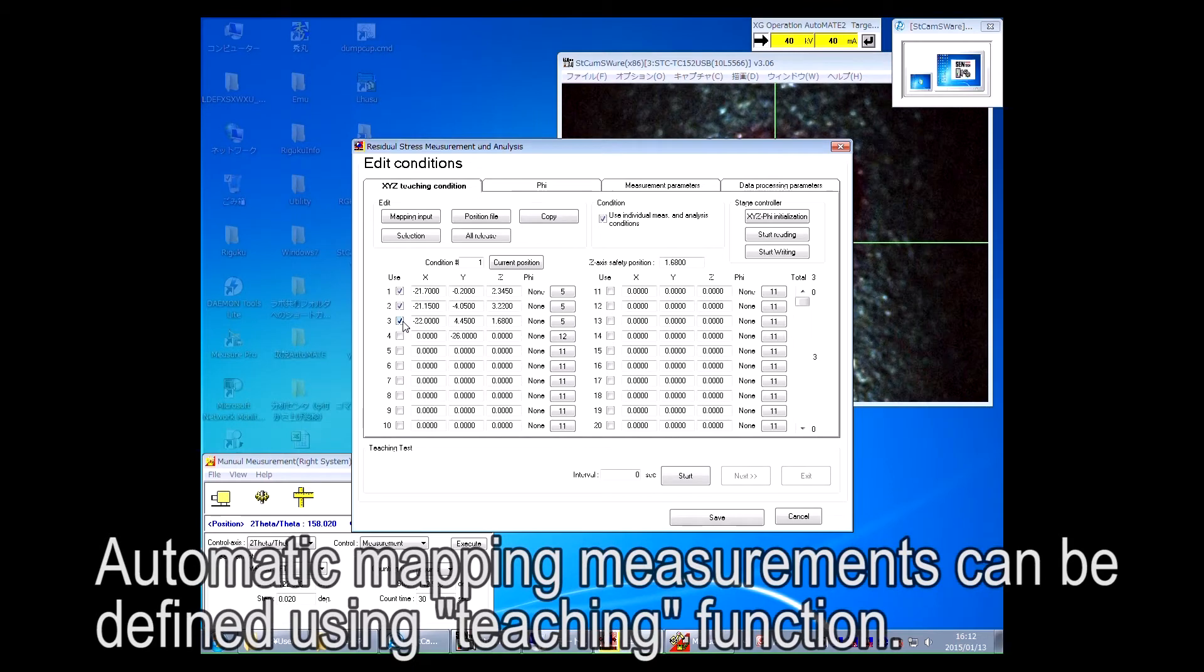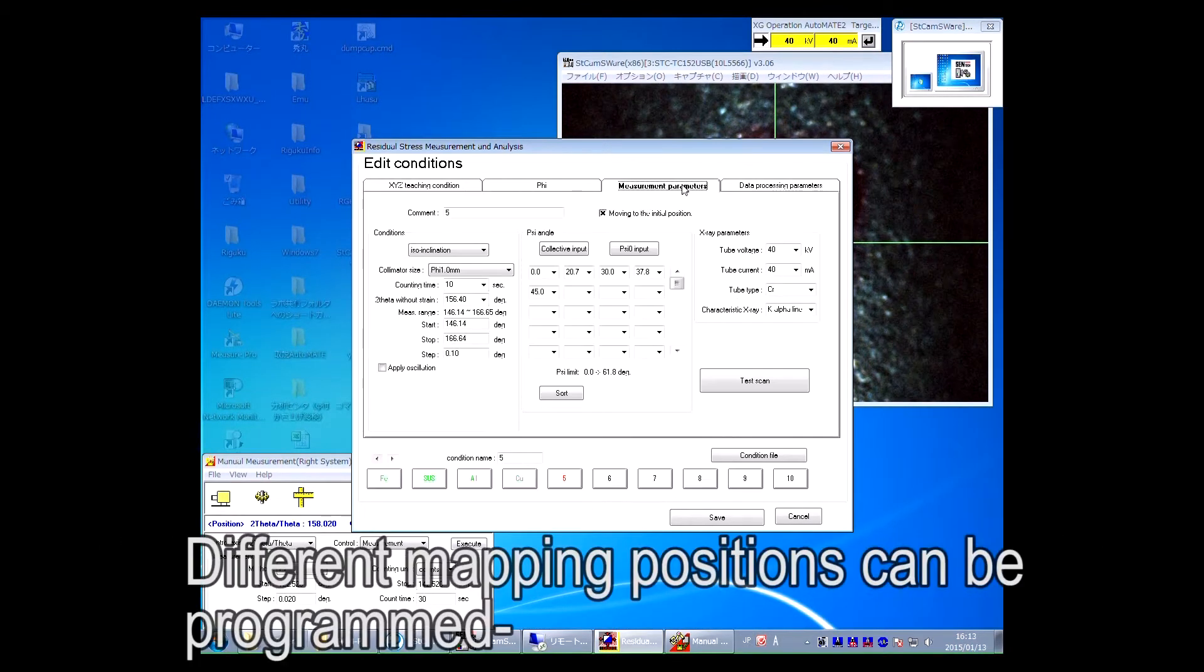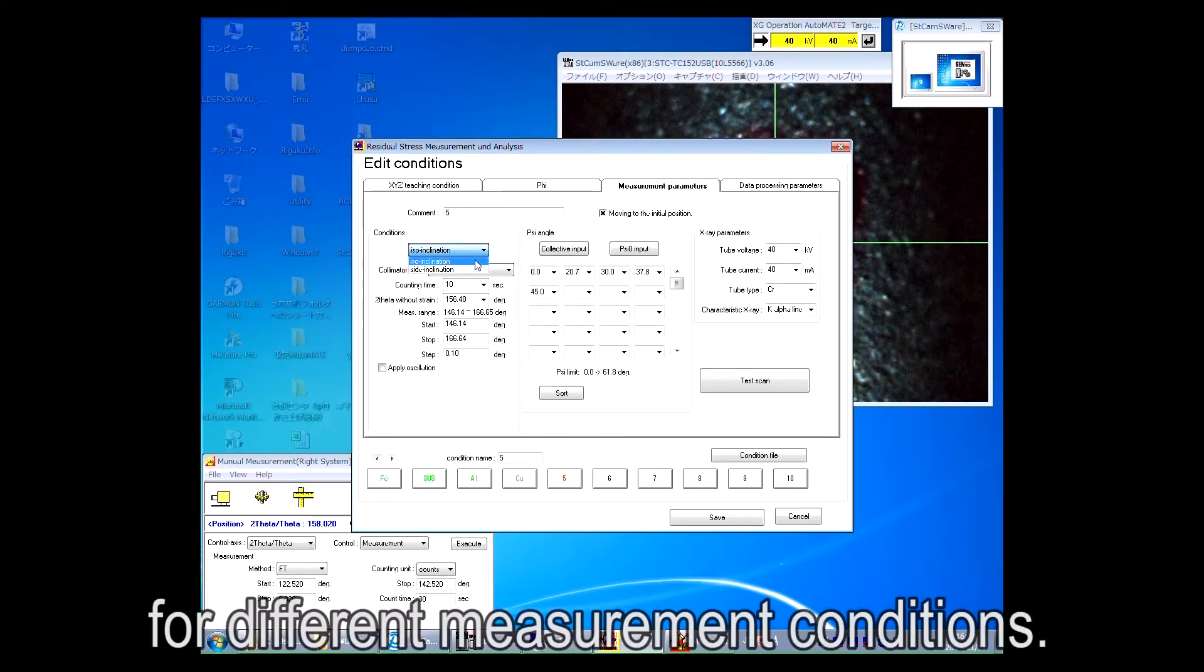Automatic mapping measurements can be defined using the teaching function. Different mapping positions can be programmed for different measurement conditions.